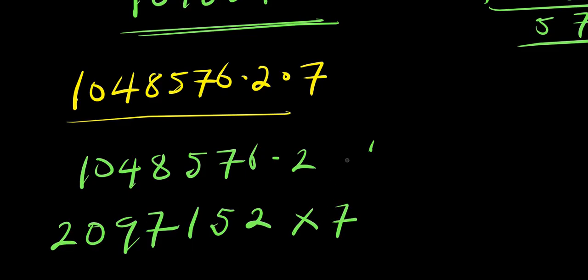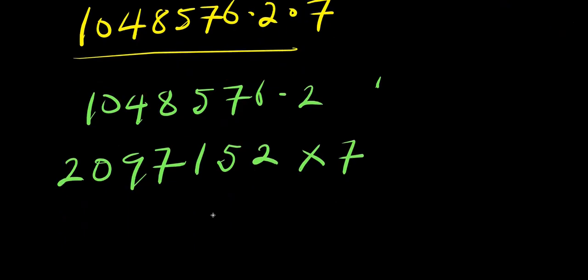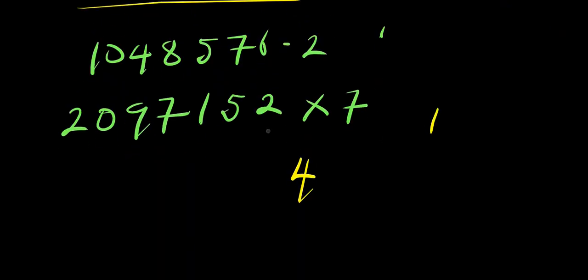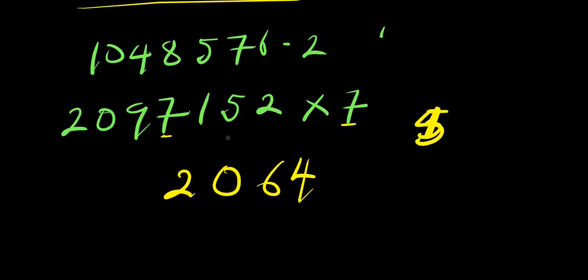Now multiply 2,097,152 by 7 to get the final answer. 7 times 2 is 14, write 4 carry 1; 7 times 5 is 35 plus 1 is 36, write 6 carry 3; 7 times 1 is 7 plus 3 is 10, write 0 carry 1; 7 times 7 is 49 plus 1 is 50, write 0 carry 5; 7 times 9 is 63 plus 5 is 68, write 8 carry 6.